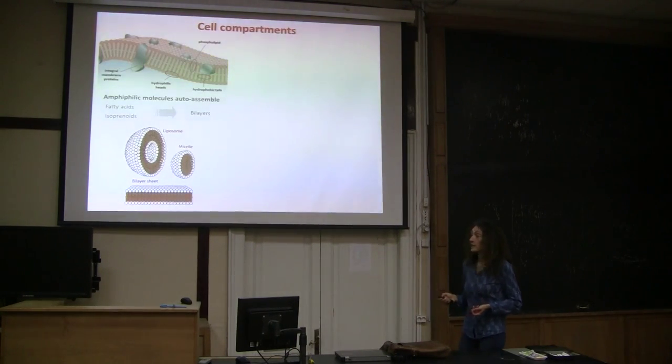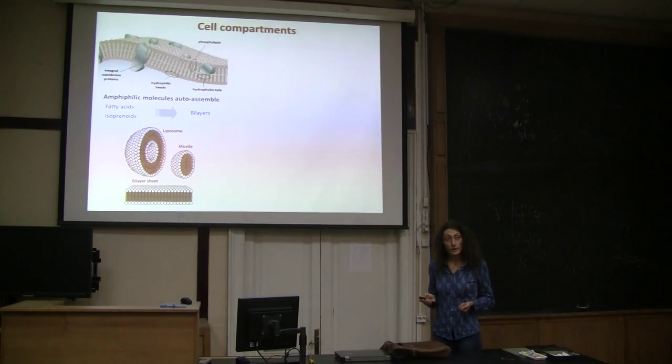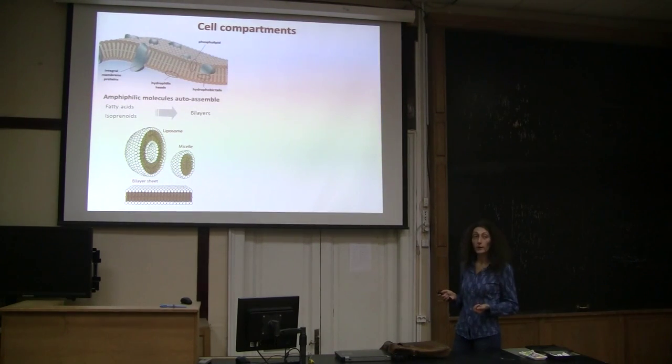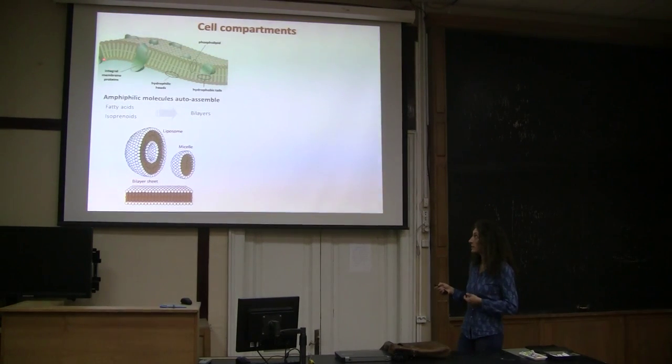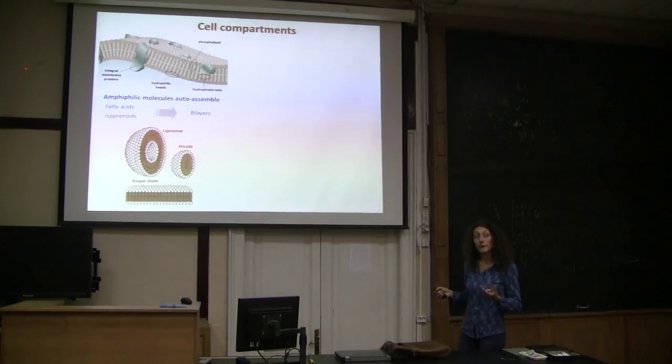And this brings us to the origin of cell compartments and membranes, because the last common ancestor at least must have had these kind of membranes. So membranes are phospholipid molecules, formed by amphiphilic molecules with hydrophilic heads and hydrophobic tails. And we know that amphiphilic molecules auto-assemble spontaneously in given conditions.